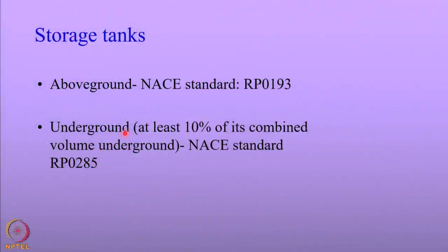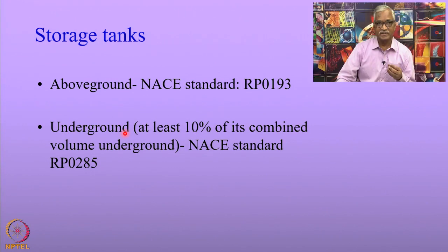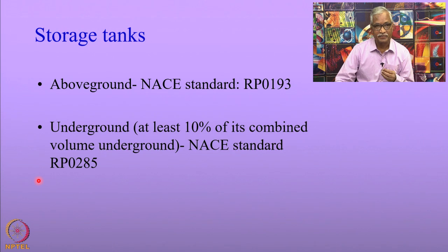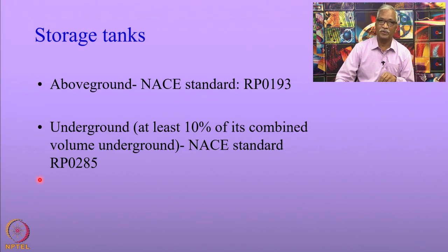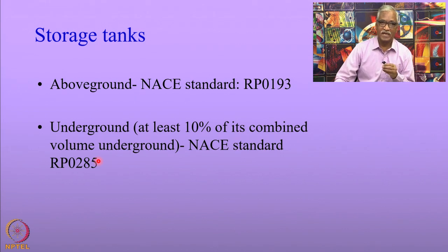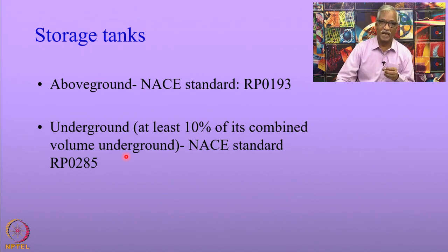The storage tanks, next only to pipelines, represent the greatest extent of cathodic protection applied to structures. The storage tanks are classified into two categories: above ground storage tanks and those which lie underground. These two types are governed by two standards: RP0193 and RP0285 for underground storage tanks. The nitty-gritty details can be seen in these standards. What we will be looking at here are the general principles and concepts behind the cathodic protection of these two types.